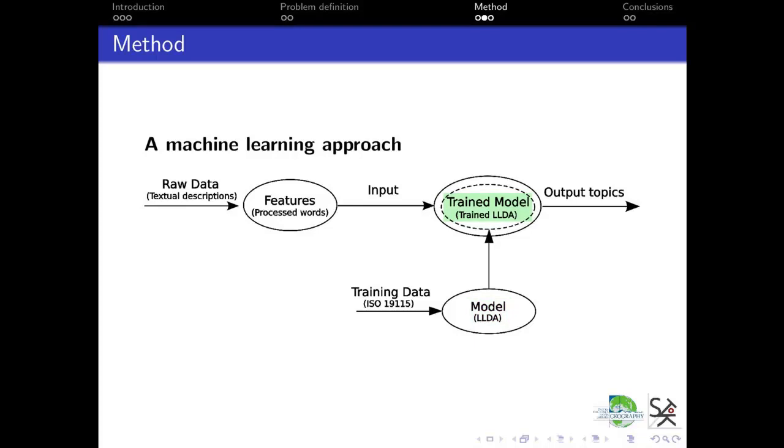We train the model here. From the raw data, we extract the features and input them into the trained model, and then we get our output result.